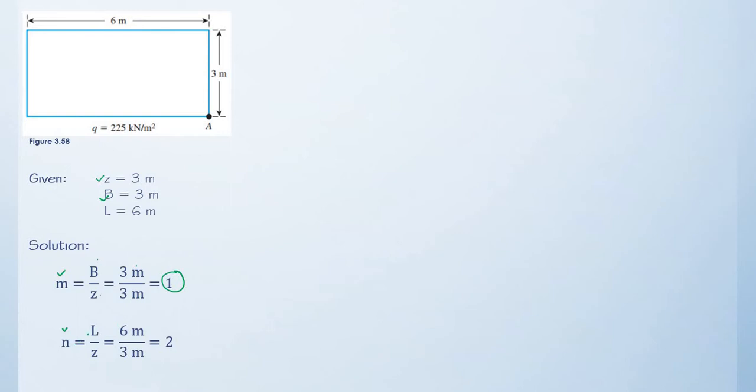And then for the value of N, that is L divided by Z. The L dimension is 6 meters. Depth is 3 meters. So, 6 divided by 3 is 2.